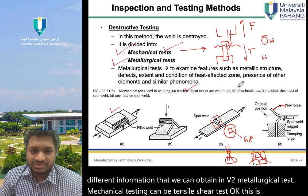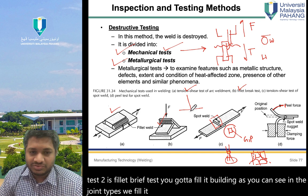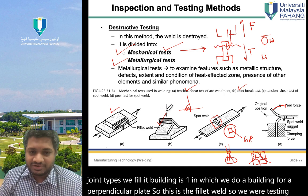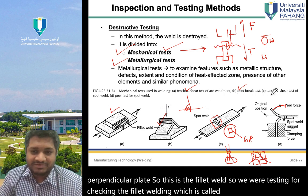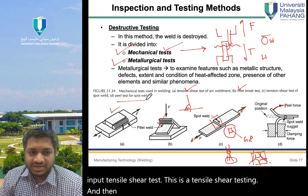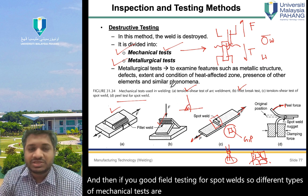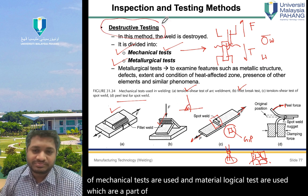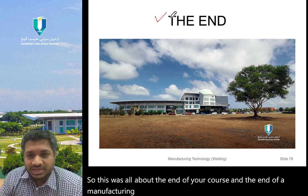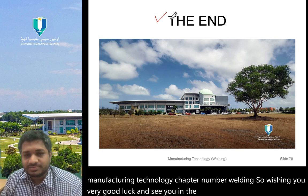Mechanical tests include tensile shear test, fillet brake test for checking fillet welds on perpendicular plates, and peel testing for spot welds. These destructive and metallurgical tests complete our coverage of welding quality and inspection. This concludes the welding chapter of manufacturing technology. Good luck and see you next semester.